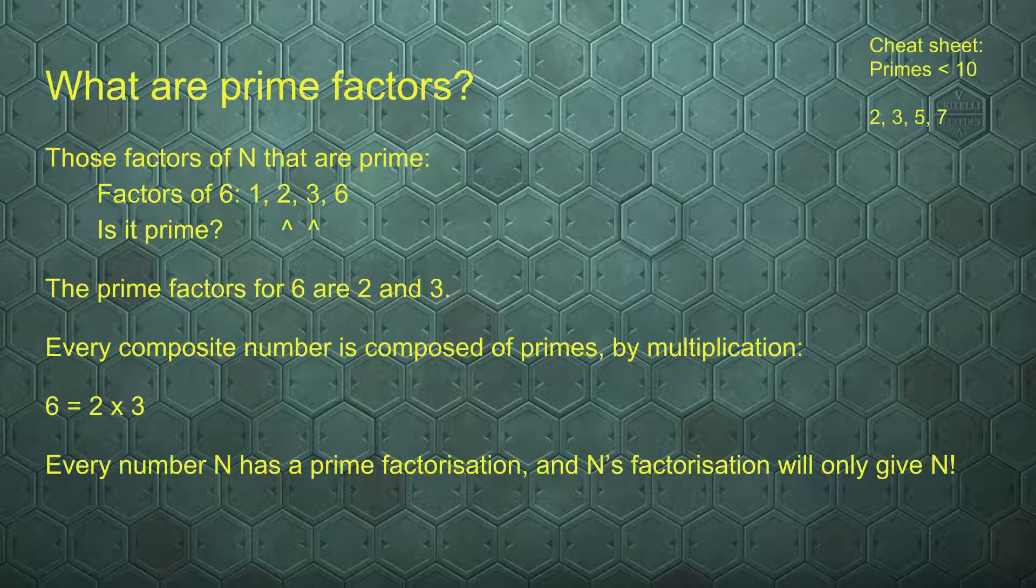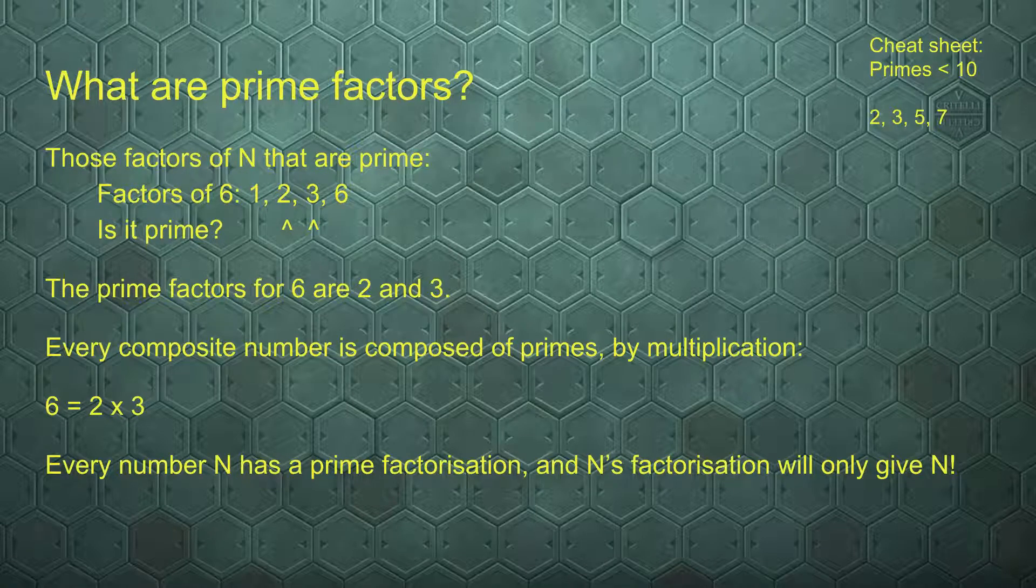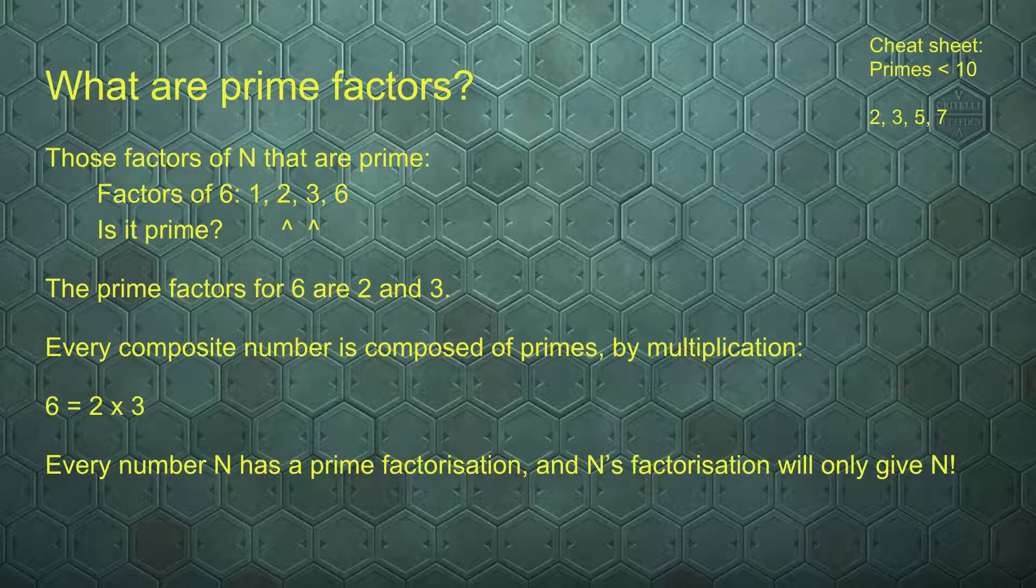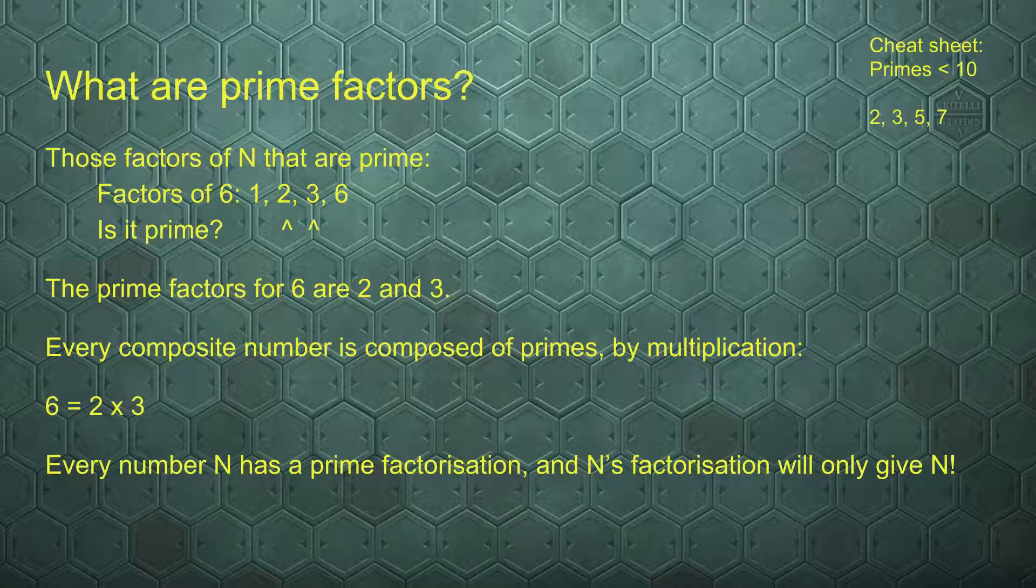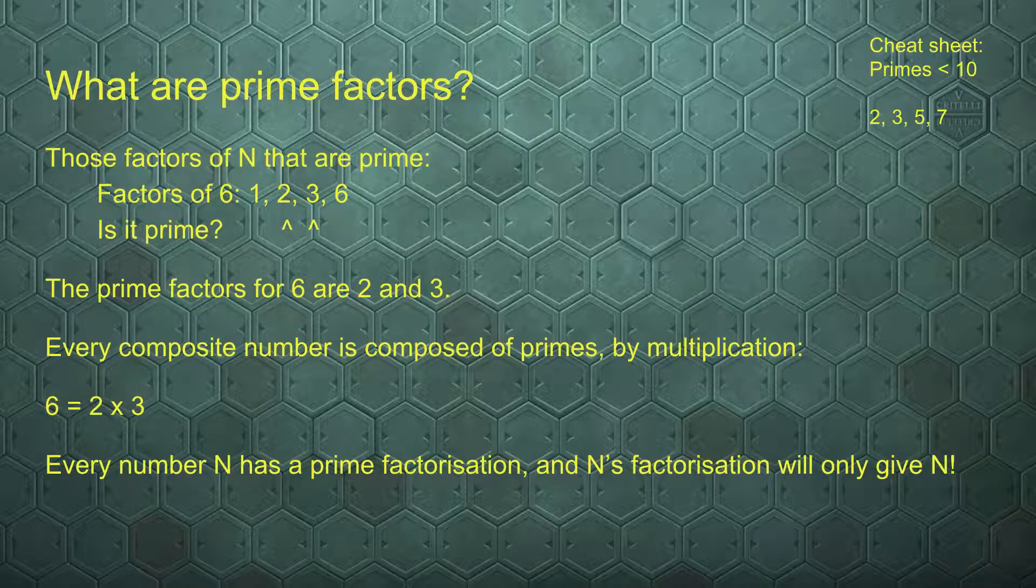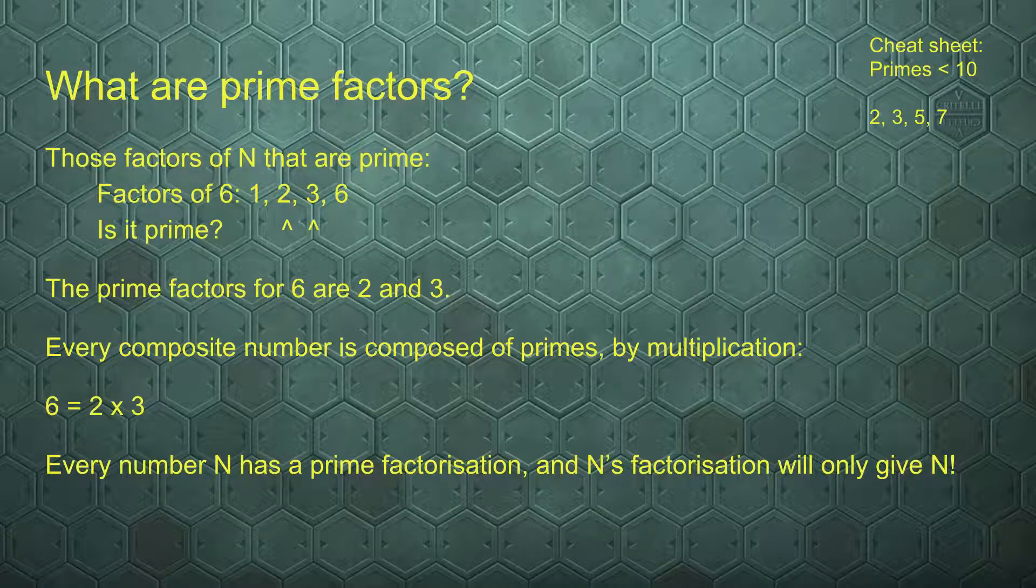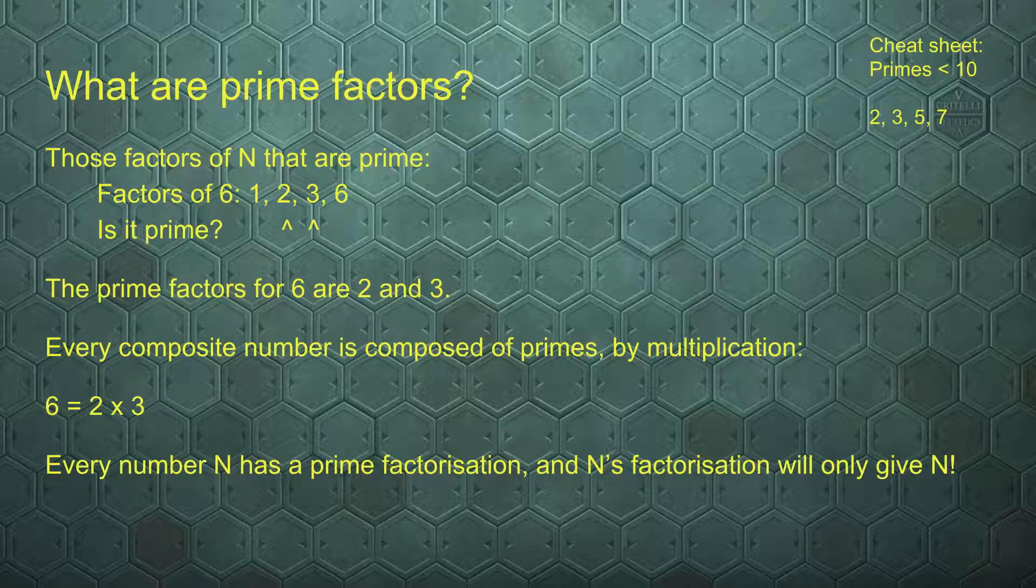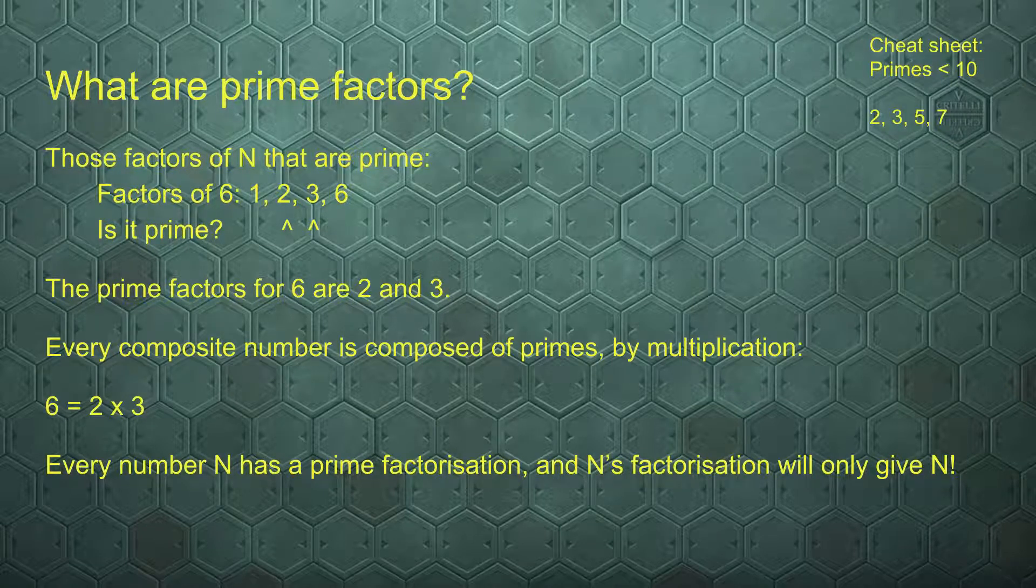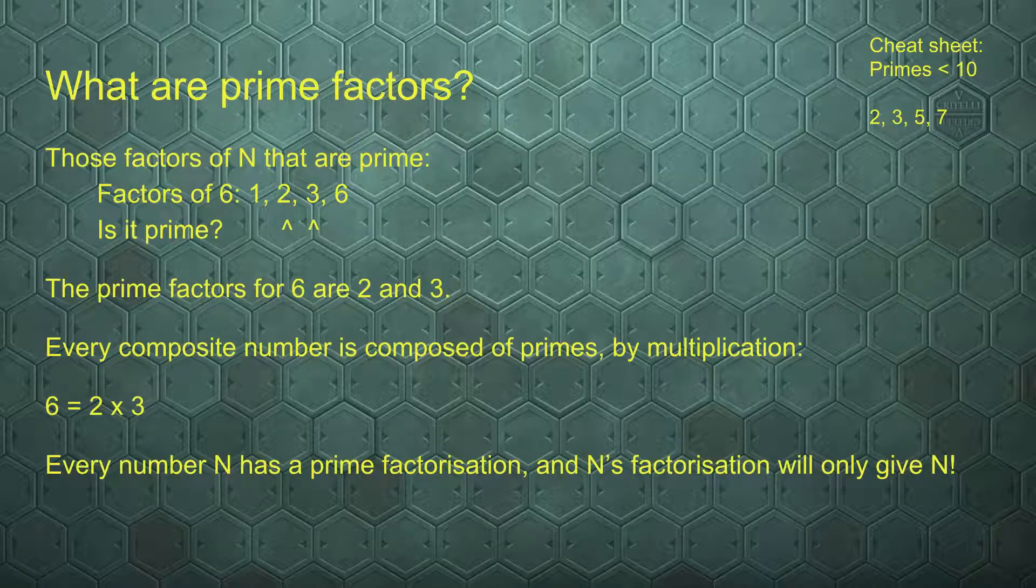Prime factors of n are factors that are prime. So 6 can be divided by 1, by 2, by 3, and by 6. And 2 and 3 are prime. So the prime factors for 6 are 2 and 3. Every composite number is composed of primes. When you take those prime factors and multiply each number in that list, you get the number n back again. If you look at 6, its prime factors are 2 and 3. We multiply 2 by 3, and we get 6 again.